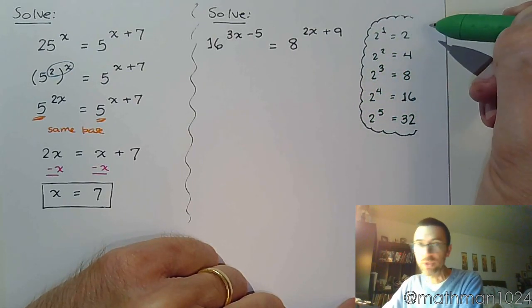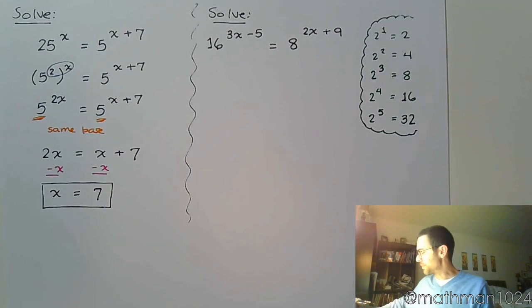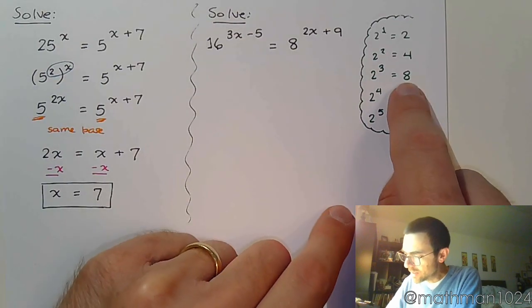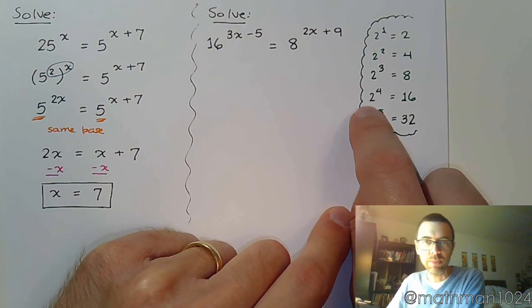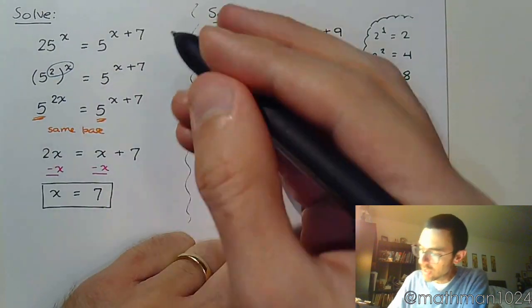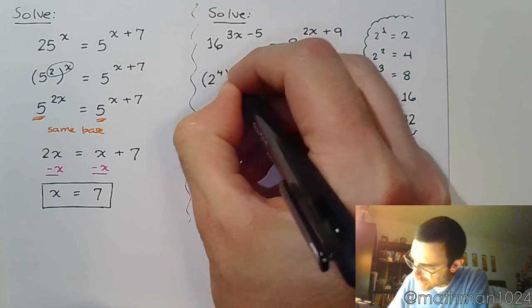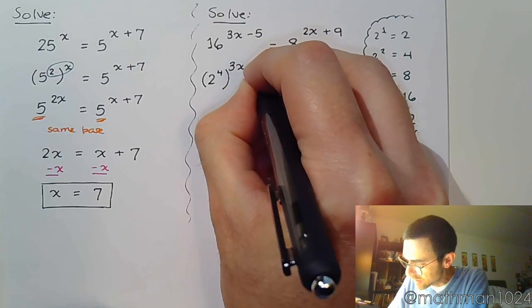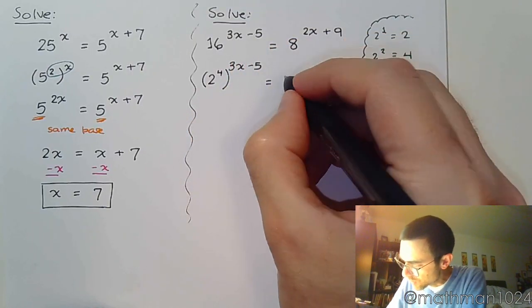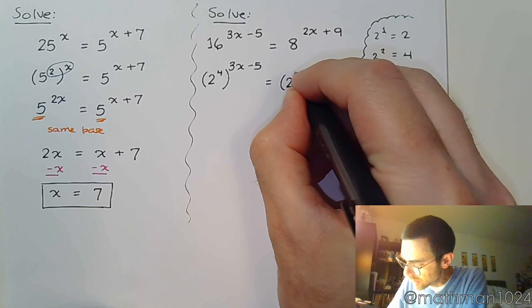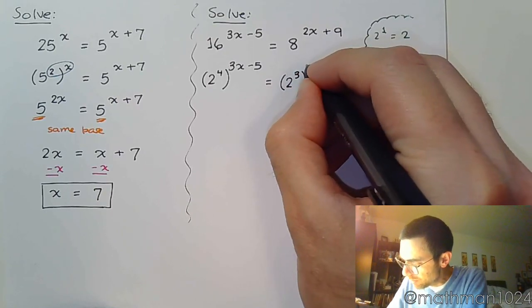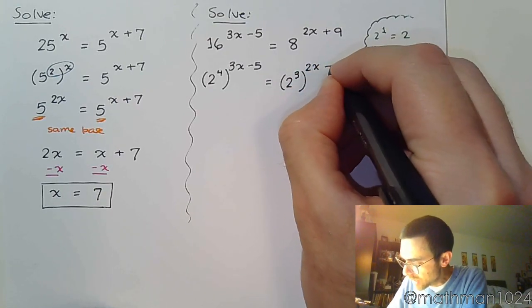We can see that 8 is a power of 2 and 16 is a power of 2, so we're going to rewrite these. Instead of writing 16, I'm going to write (2^4)^(3x-5), and 8 gets rewritten as (2^3)^(2x+9).